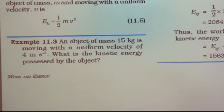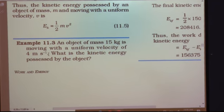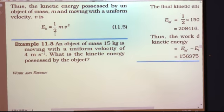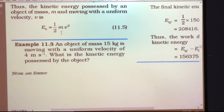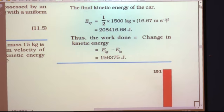The first solved example is Example 11.3. An object of mass 15 kg is moving with a uniform velocity of 4 metres per second. Mass is given as 15 kg and uniform velocity is 4 metres per second. We have to find out the kinetic energy possessed by the object.